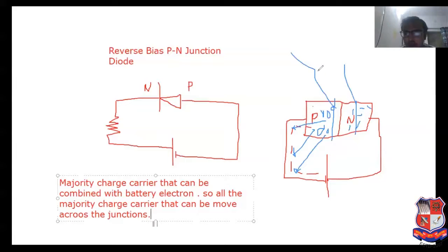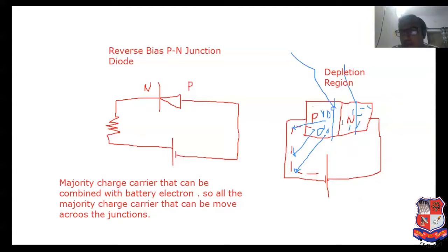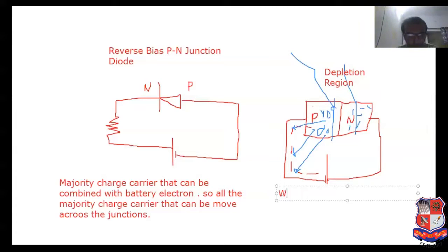When the majority charge carrier goes away from the junction, the depletion region is increased. This is known as the depletion region. The majority charge carrier goes away from the junction, so the width of the depletion region is increased. Width of depletion region is increased — this is important for MCQ.